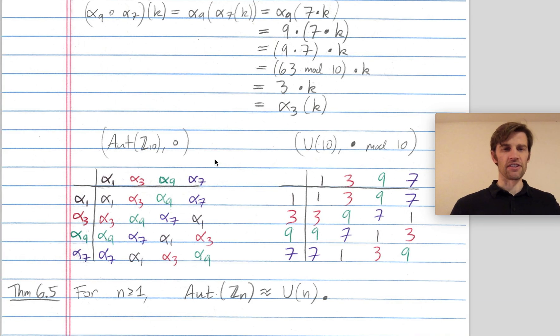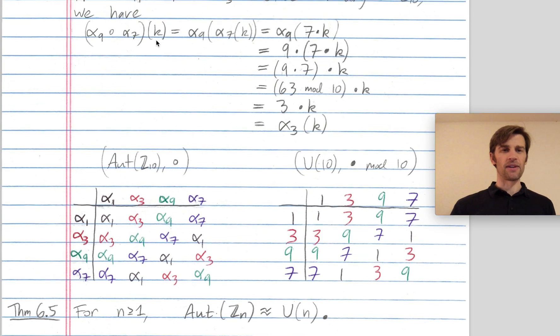You can draw the multiplication tables for these groups. What we have here is the multiplication table for U(10). Its elements are 1, 3, 7, and 9, and the operation is multiplication mod 10. We could also draw the multiplication table for this group of automorphisms of Z_10. The four automorphisms were alpha 1, 3, 9, and 7. We could try composing any two of these automorphisms and we'll get a third. The pattern is totally paralleled by how multiplication works in U(10).